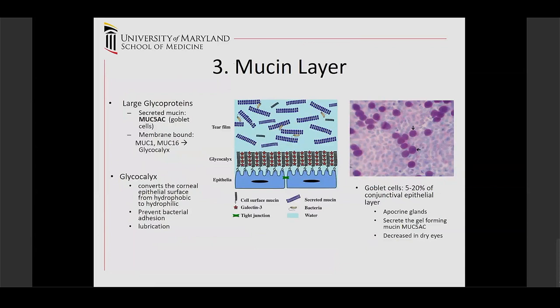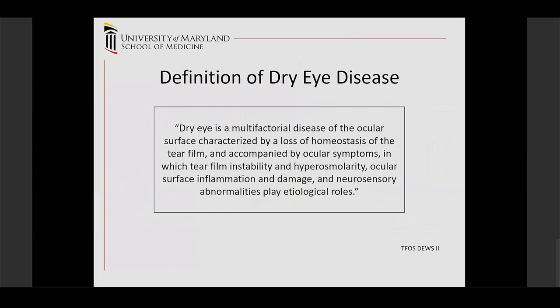In order to study any disease, it's important to have a definition that everybody can agree on. The TFOS DEWS II came up with a clear definition: dry eye is a multifactorial disease of the ocular surface characterized by a loss of homeostasis of the tear film, accompanied by ocular symptoms. Tear film instability and hyperosmolarity, ocular surface inflammation and damage, and neurosensory abnormalities play etiologic roles.